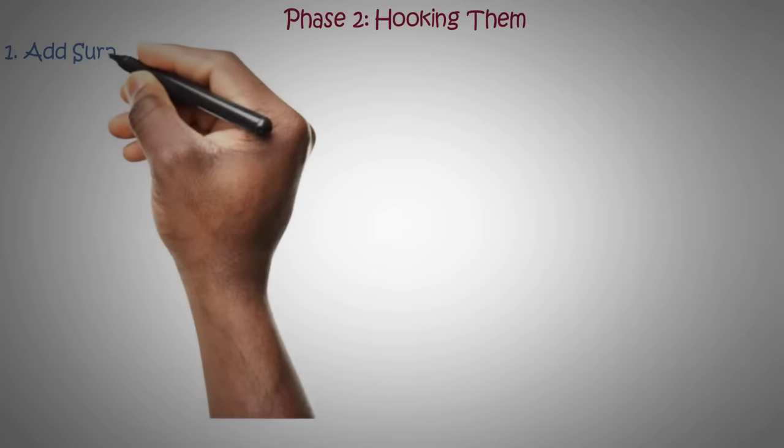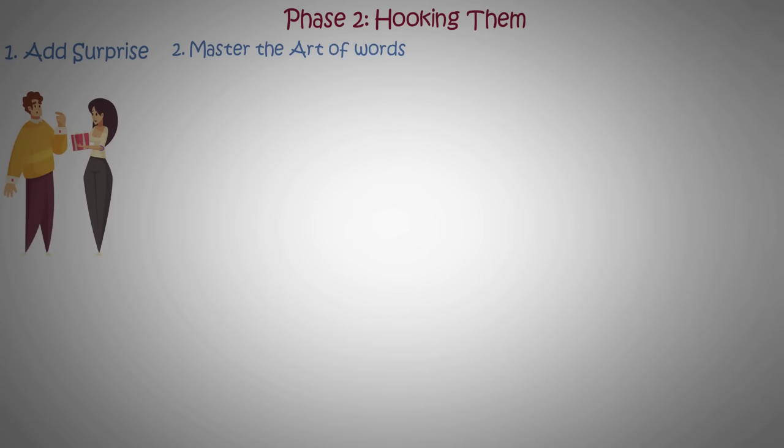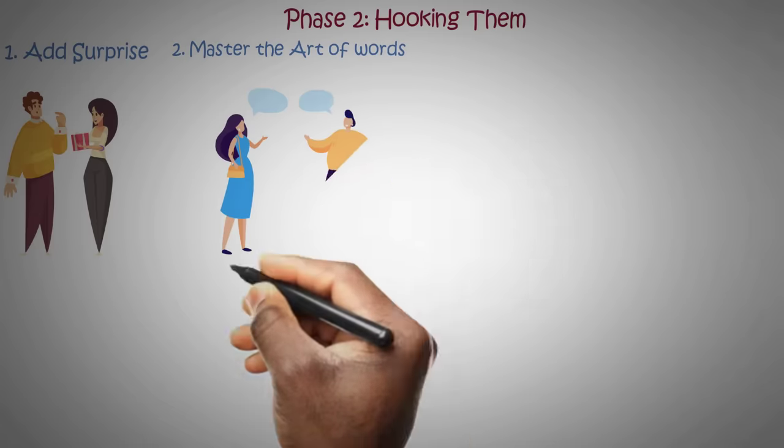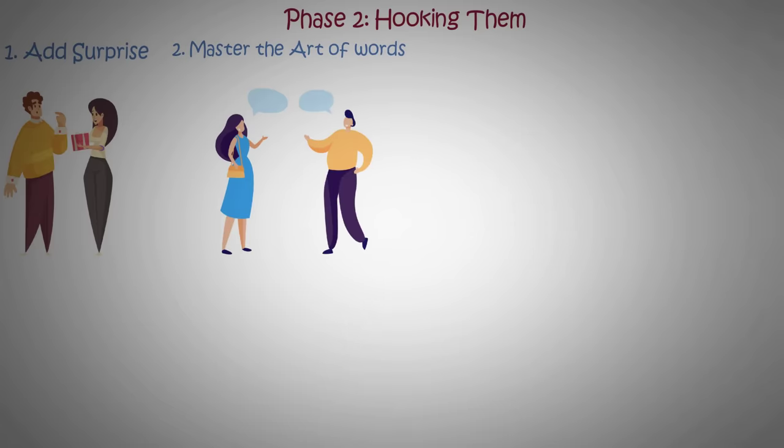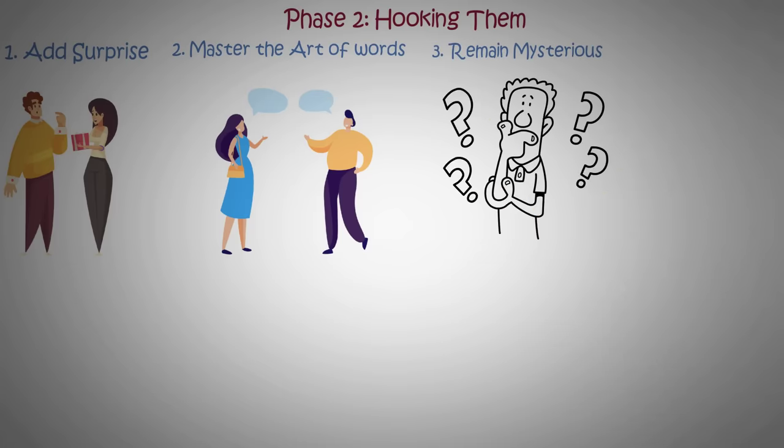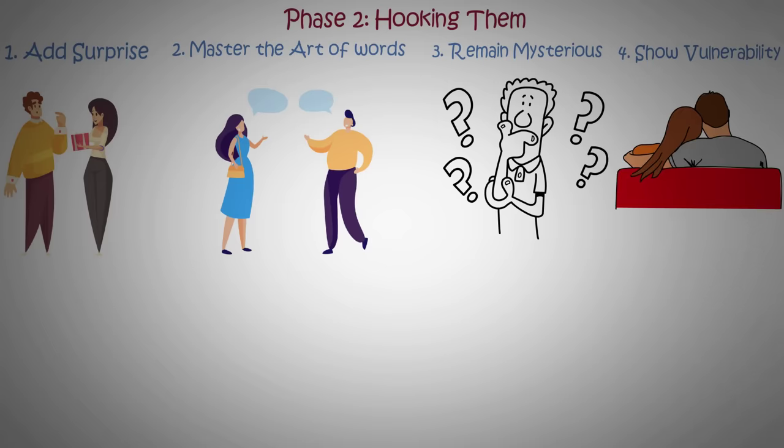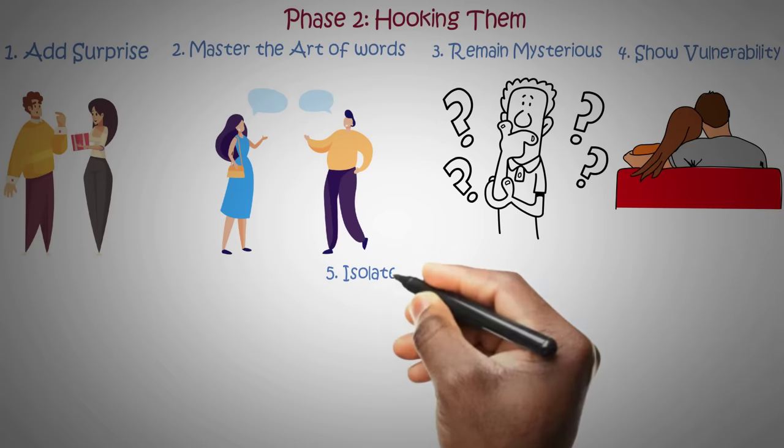Patience is key. You're building intrigue, not rushing. Phase Two: Hooking Them. Now you want to transition from intrigue to full attention. One: Add surprise. Keep things interesting by occasionally surprising them with gifts or spontaneous adventures. Two: Master the art of words. Craft your words to direct their thoughts and emotions. Flatter them on their insecurities and be strategically vague. Three: Remain mysterious. Continue to play a role rather than revealing your true self. Adapt to their likes and dislikes. Four: Show vulnerability. Gradually reveal a vulnerable side to create a sense of closeness.